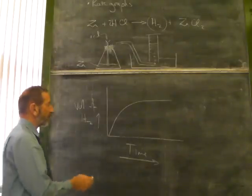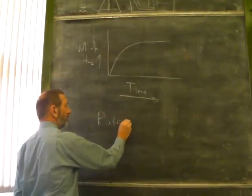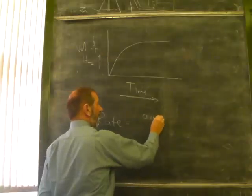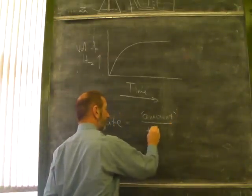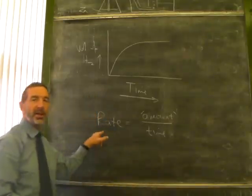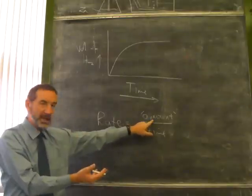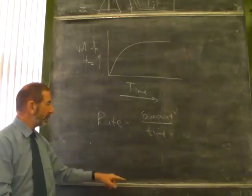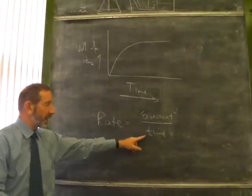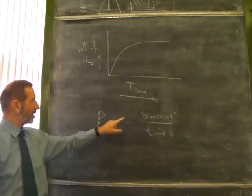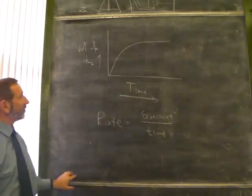To work out the speed of a reaction, there are two things you need to know: amount and time. You know, the rate doesn't just apply to chemical reactions. You could have the rate at which I'm speaking - how many words am I speaking per minute? It could be in a car - how many miles or kilometers are you covering in an hour? Rate always compares a certain quantity and a certain time.